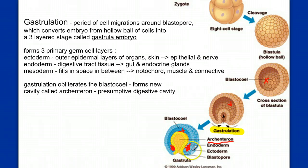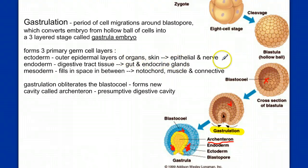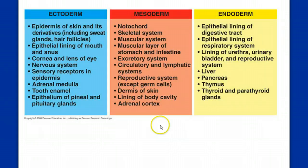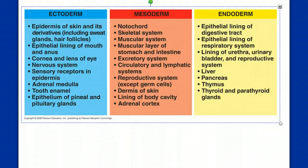Eventually cells break off to form a middle layer called mesoderm. These three primary germ layers give rise to different systems: the ectoderm gives rise to skin, epithelial layers of organs, and the nervous system; the endoderm gives rise to the digestive tract and endocrine glands; and the mesoderm gives rise to skeletal systems, muscle systems, and connective tissues. A detailed chart in your note packet lists the tissues each germ layer will eventually produce.